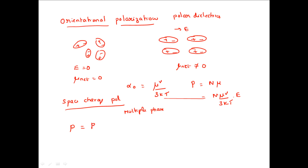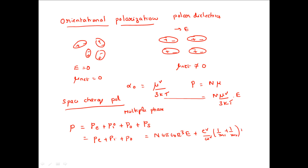The total polarization is a combination of electronic polarization, ionic polarization, orientational polarization, and space charge polarization. Space charge polarization is negligible compared to the other three. Therefore, the total polarization can be written as P = n · [4πε₀r³ · E + (e²/ω²)(1/M1 + 1/M2)·E + (μ²/3kT)·E]. This equation for the total polarization of a dielectric material is known as the Langevin-Debye equation.